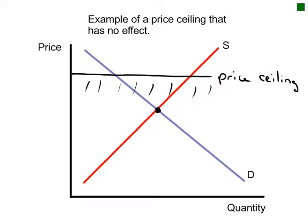Here's an example of a price ceiling that has no effect. If we put the price ceiling up here, it means we can't charge anything more — think of it as the ceiling, that's as high as you can go — but you can charge less if you wanted to. Because the market equilibrium price is attainable, that's the one that will prevail, and so the price ceiling will have absolutely no effect.